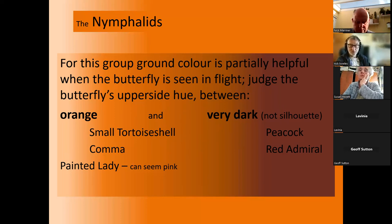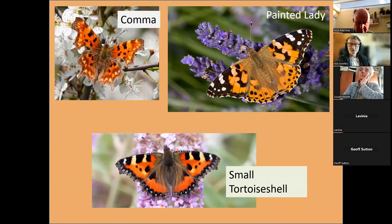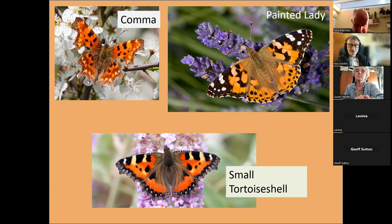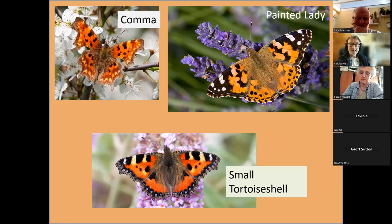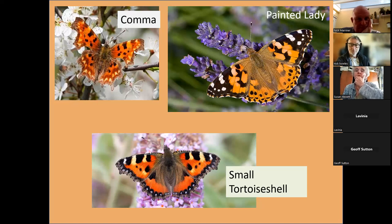Let's begin with the orangey ones — remember, the wing edges. The first thing we notice about the wing edge of the comma is that it's very ragged. I've had people say 'that poor thing must have suffered in the winter, look at its wings' — but no, that's actually the shape it always was. That very ragged wing edge is a great clue to it being a comma. In addition, look just inside the edge of the wing and there's a row of yellow lunules on all four wings — those little triangular marks are called lunules.